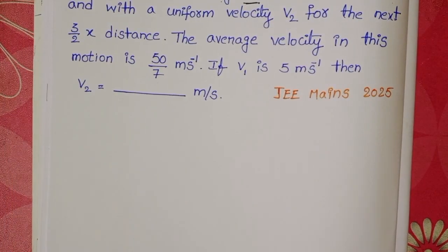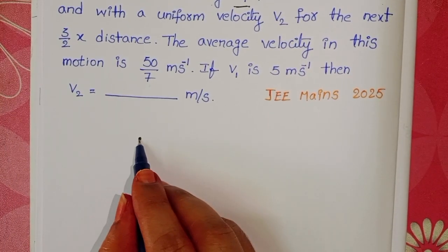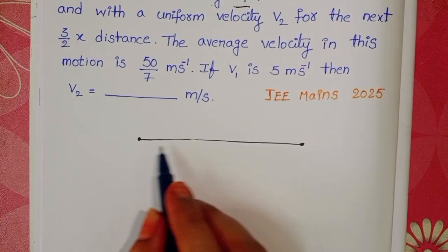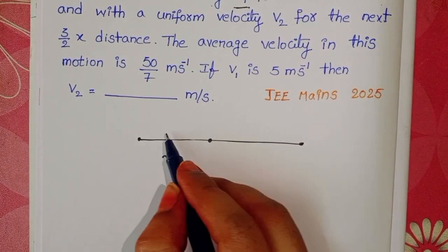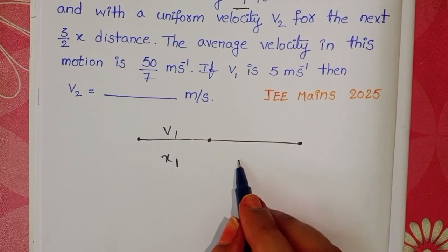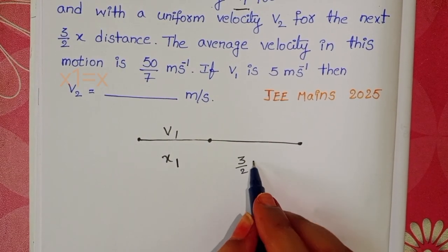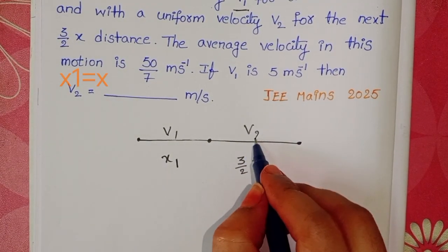In this question a person is travelling along a straight line path. The person covers a distance x with velocity v1 and 3 by 2 x distance with velocity v2.